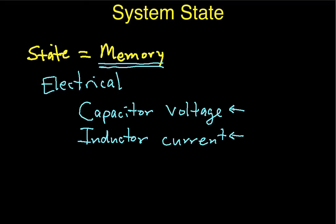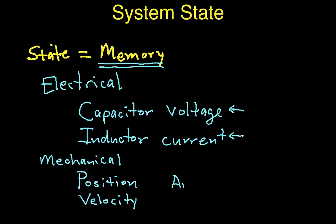This is one way that you can identify state variables in an electrical system. In a mechanical system, typically state variables are things like position, velocity, angular position if I'm talking about something that's rotating, and angular velocity.